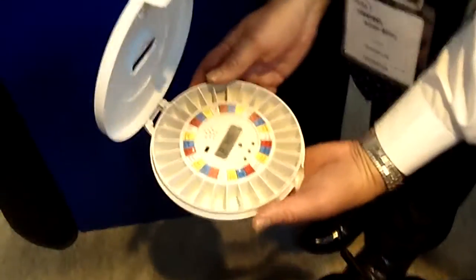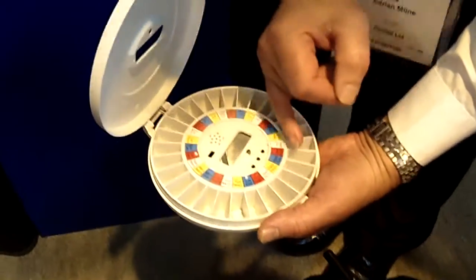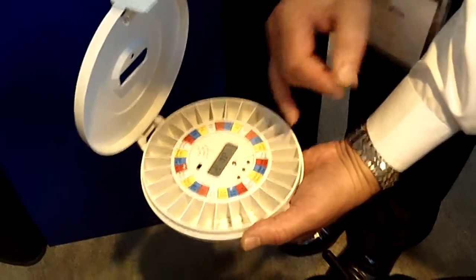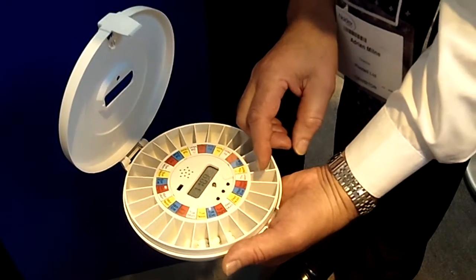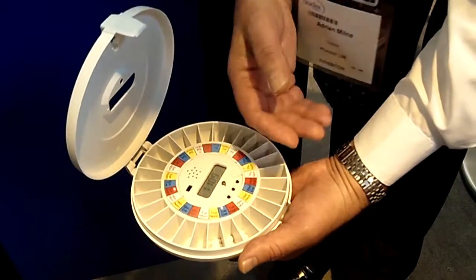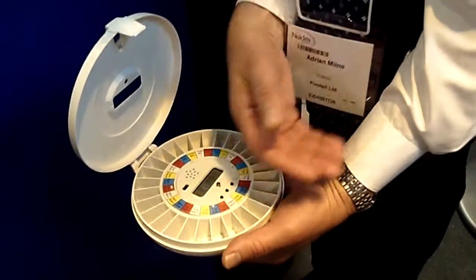The way it works is you have a tray with 28 compartments in it. You can set it to alarm up to 28 times a day. Typically, if it was yourself, how many times a day?